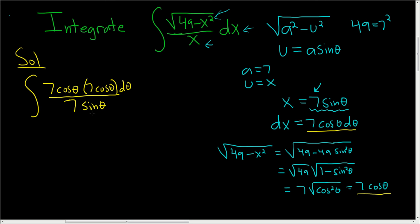So at this point some stuff should cancel. Looks like we lose a 7. So this is equal to 7. I'll pull it out. Cosine times cosine is cosine squared theta over sine theta d theta.